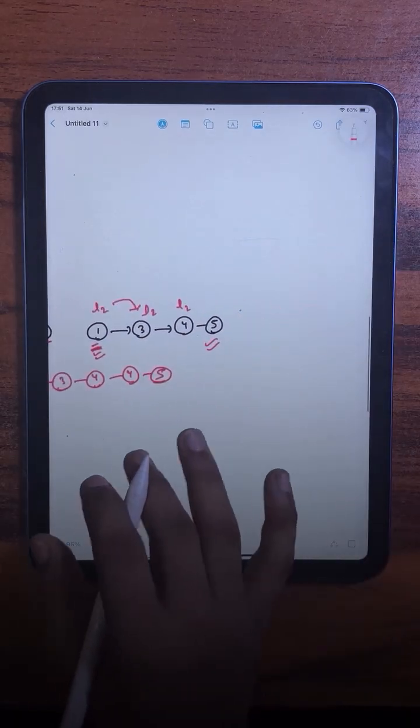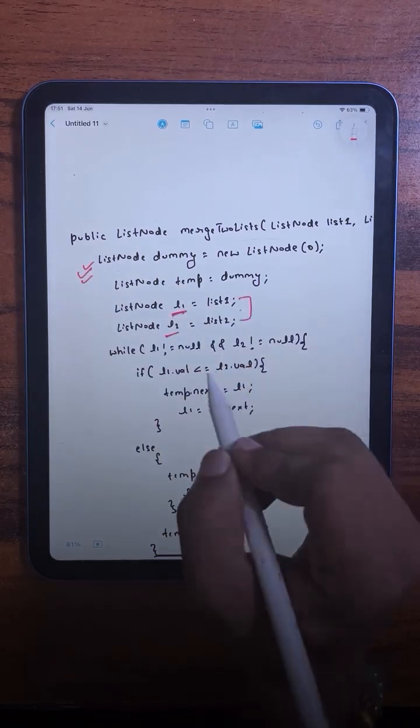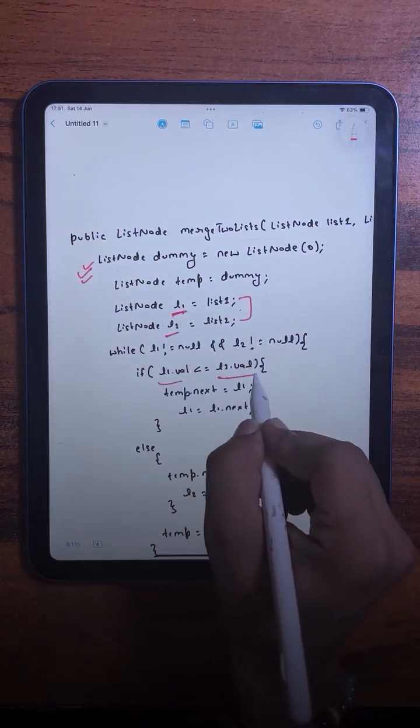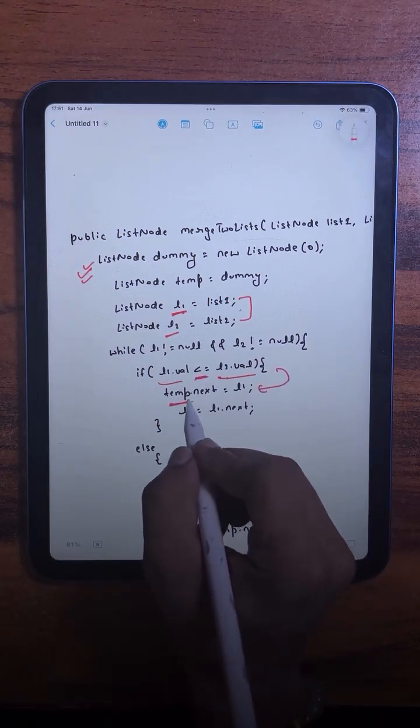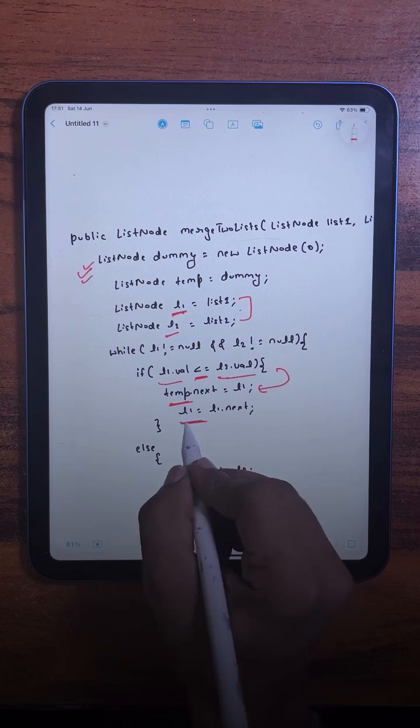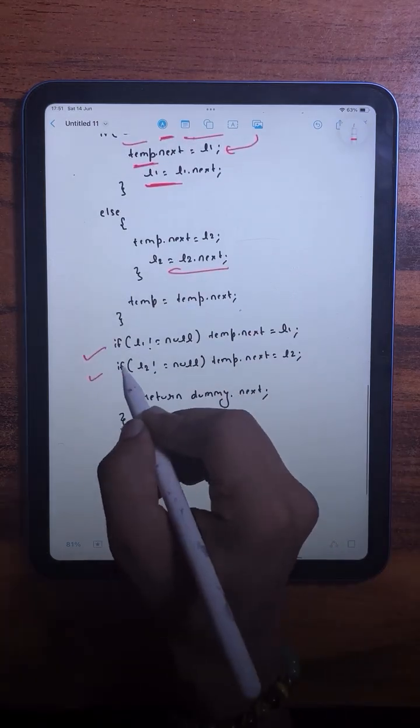Okay, and the same thing we have done here in the code. We have a dummy node here and we took two pointers, one for each list. After that we are comparing the current elements, and whichever one is smaller we are adding that to the resultant list. After attaching, we are just moving that pointer ahead. The same thing we have done here, and if any of the lists is still left with few elements,